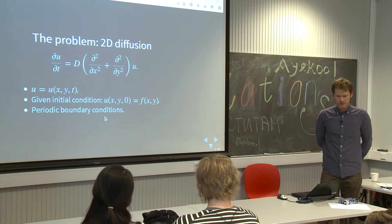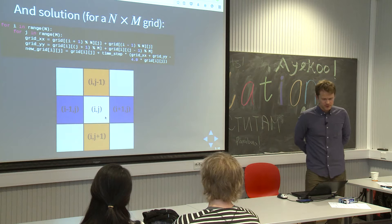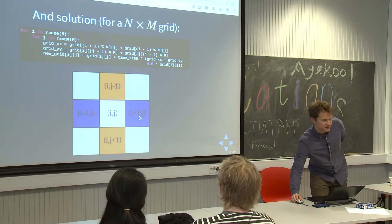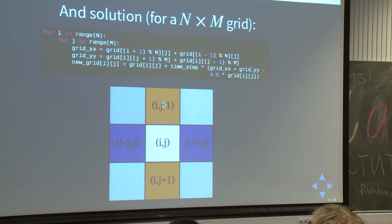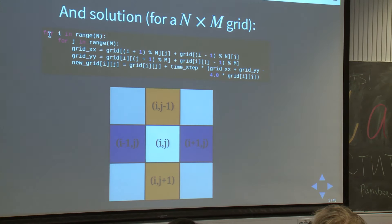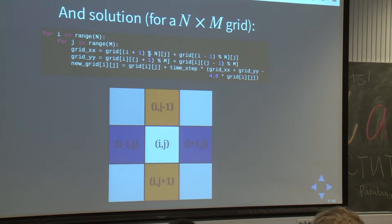To write down that solution numerically is actually not too hard. It's basically just evaluating the derivatives numerically. I can do that in the X direction by using these three items, and in the Y direction with these three items. So I'm solving it now on a two-dimensional grid. This is actually Python code for solving it, and this modulo operator just takes care of the periodic boundaries.